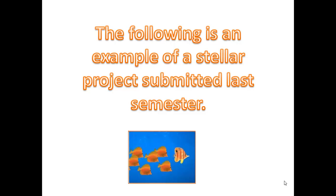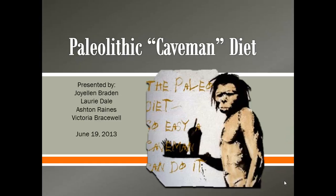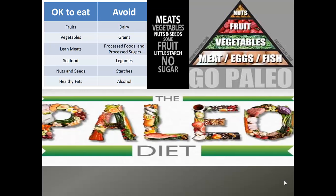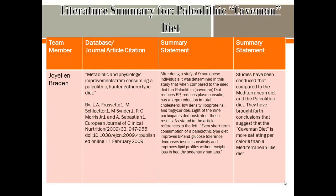I wanted to provide an example of a project that was submitted last semester. Sometimes if you know what the end product looks like, it makes it a little easier to do. We had a group last semester that did the research project on the caveman diet, and there were four people in the group. Yours doesn't have to look exactly like this — you can be creative — but the essential elements required on the rubric are here. We have a slide that introduces the diet in general, some things to help the person understand what foods are allowed and not allowed, and then each student would indicate that this was their slide and the article they found.